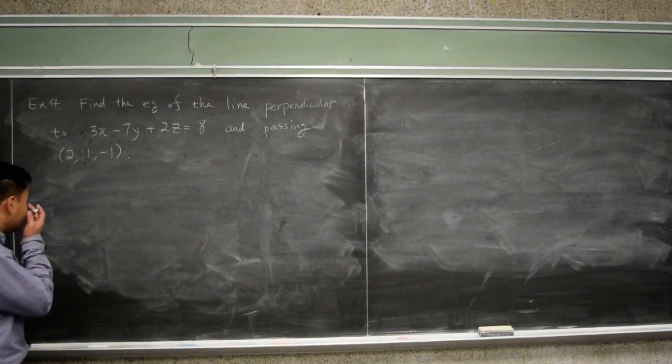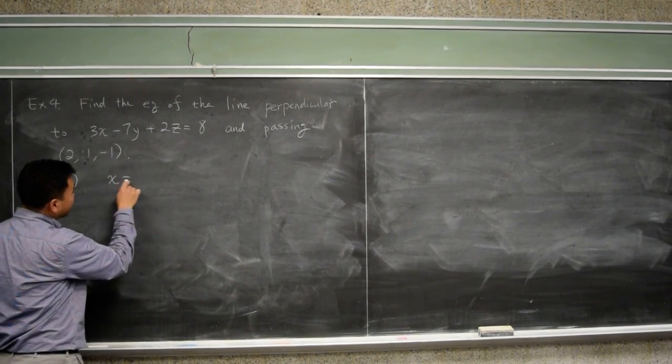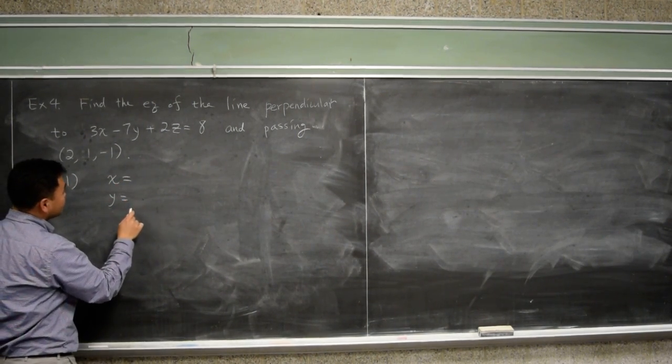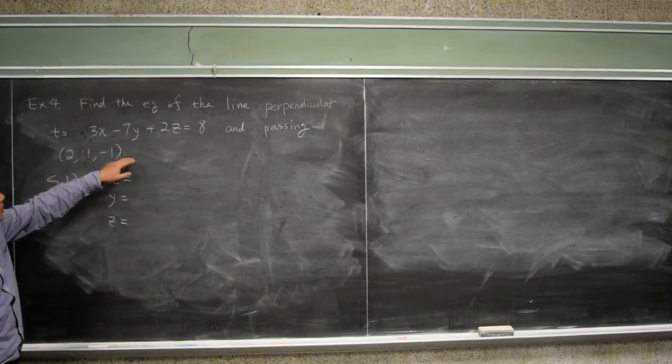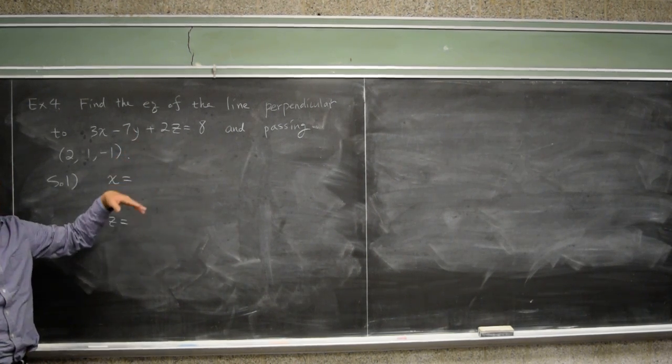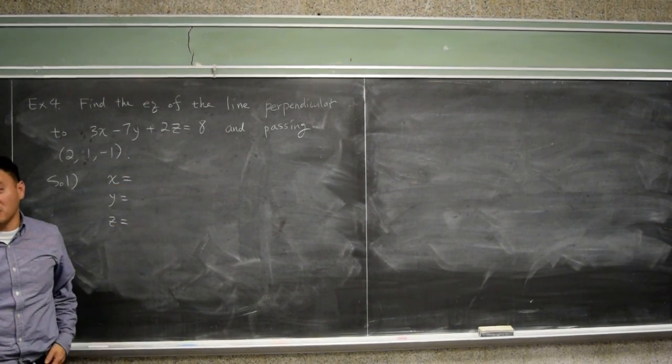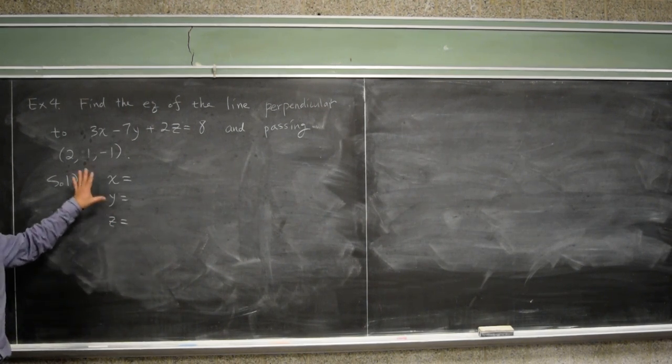Alright, so let's start out by writing the equation of the line. I should have noted something like find the answer in both parametric and symmetric, or maybe just one of them. But you have to know how to find both, okay? So we'll try to find both of them.